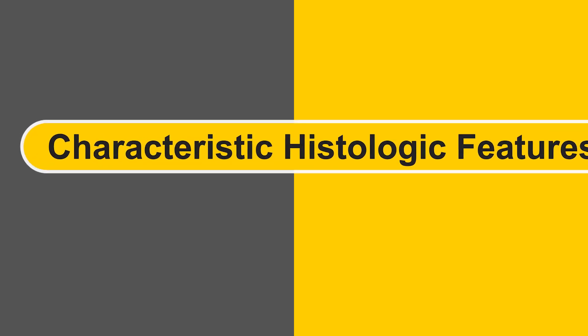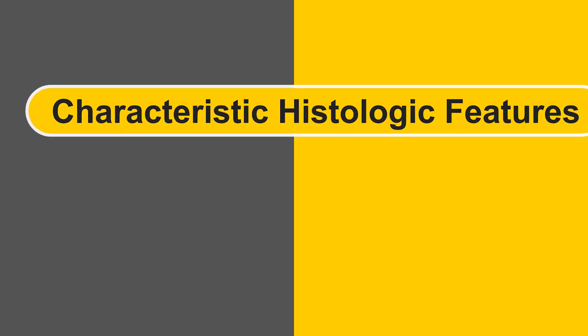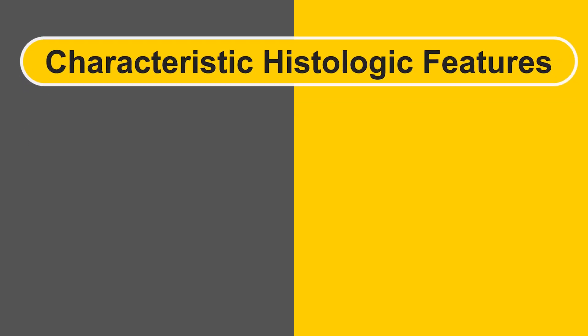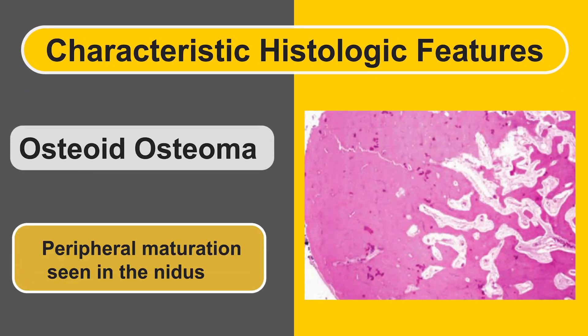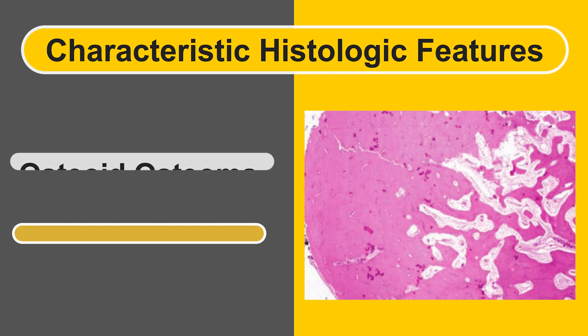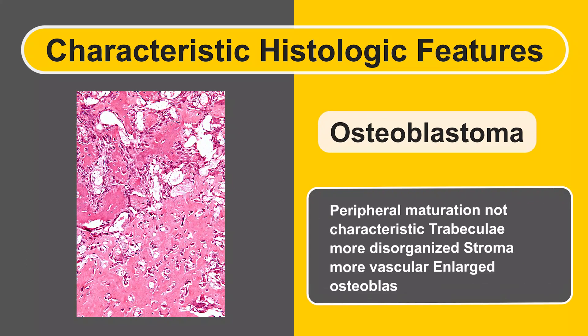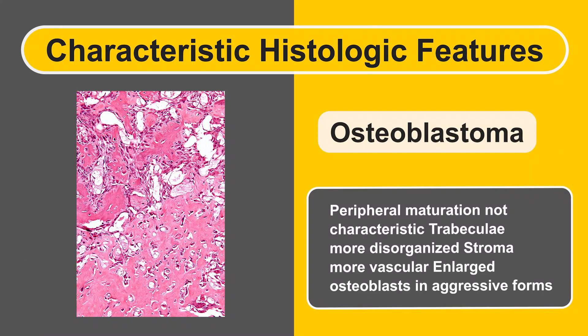Fifth feature: characteristic histologic features. Osteoid osteoma shows peripheral maturation seen in the nidus. Osteoblastoma does not show peripheral maturation; trabeculae are more disorganized, the stroma is more vascular, and enlarged osteoblasts are seen in aggressive forms.